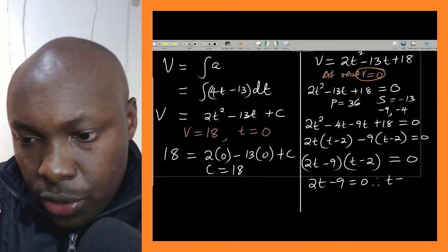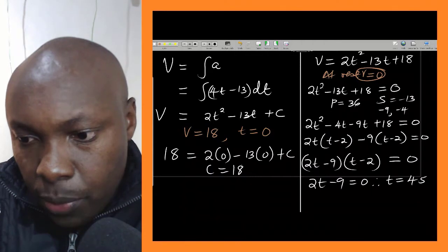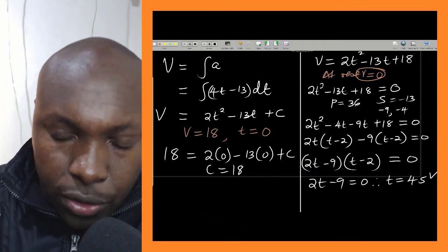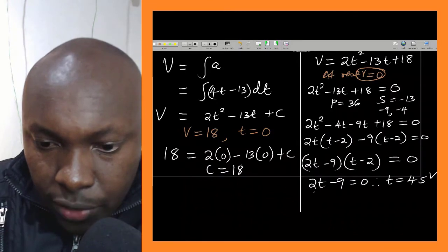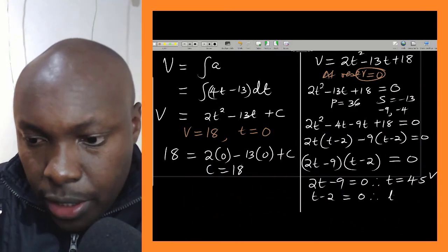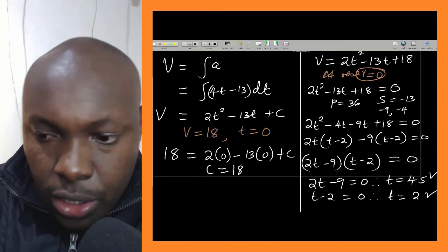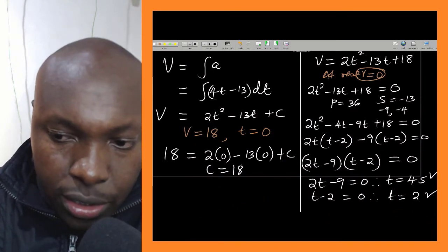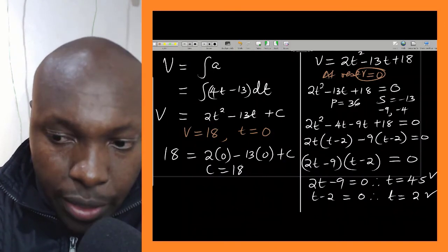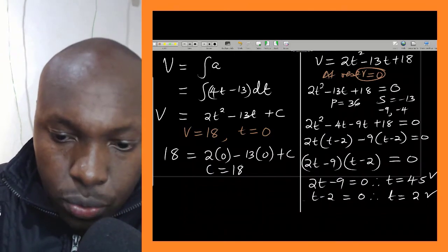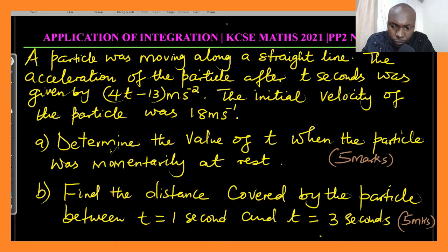From 2t minus 9 = 0, we get t = 4.5 seconds — the first instant when the particle is momentarily at rest. From t minus 2 = 0, we get t = 2 seconds. Therefore the particle is momentarily at rest at t = 4.5 seconds and t = 2 seconds.